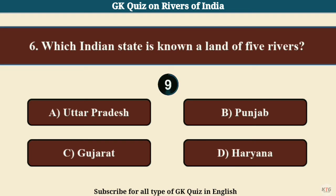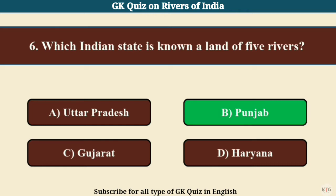Question No. 6. Which Indian state is known as the land of five rivers? Answer B: Punjab.